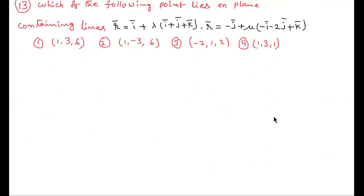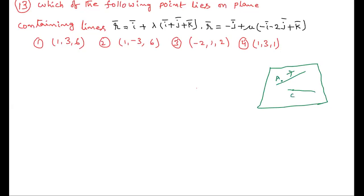Next question: which of the following points lies on the plane containing two given lines? The two lines are given in vector form — each passing through a point and parallel to a direction vector. We need to first find the equation of the plane, which requires finding the direction ratios (DRs) of the plane.